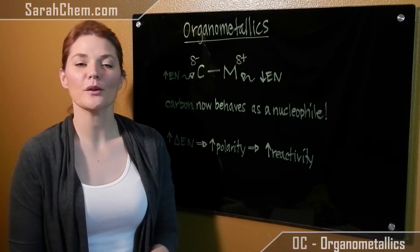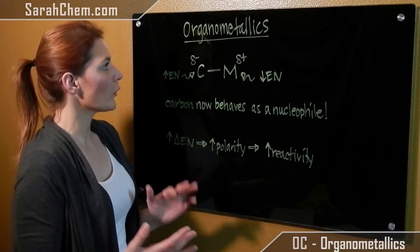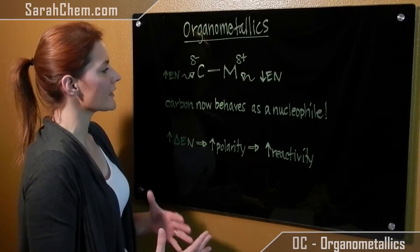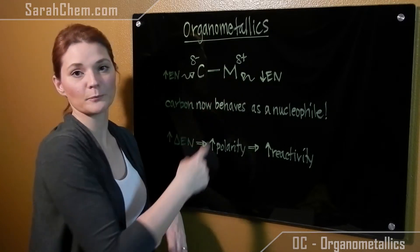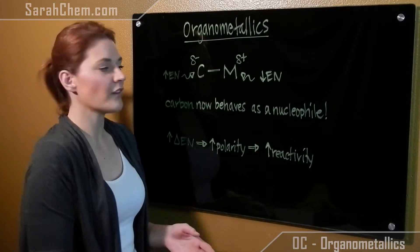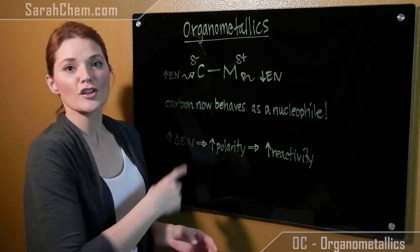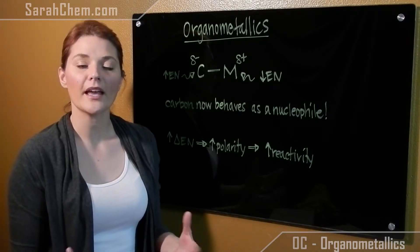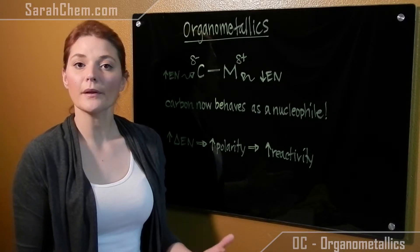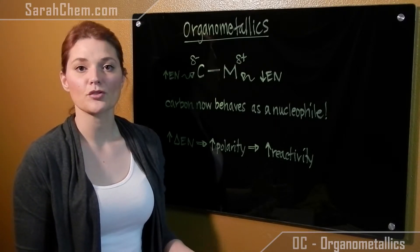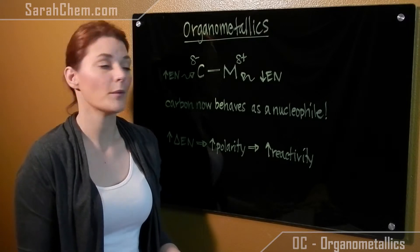Hi everyone, this is a video tutorial on organometallics. An organometallic is a compound where a carbon is directly attached to a metal. A metal would have a lower electronegativity than carbon would. This provides an interesting property, very different from the rest of organic chemistry. Typically in organic chemistry, the carbon has a partial positive charge and it behaves like an electrophile.